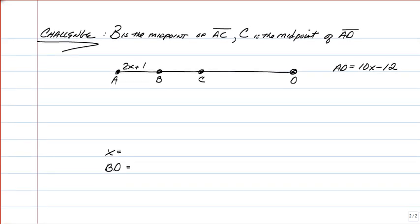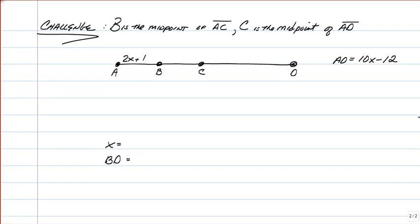Last one is a challenge question. Now it's not that much difference from what we just did, except for now we have a double midpoint problem. B is the midpoint of AC, and C is the midpoint of the biggest segment AD. And you are given that AB is 2x plus 1, and AD is 10x minus 12. Again, I'd like you to try this on your own. Go ahead and pause the video. As soon as you're ready, click play, and this time I will go through this step by step just so you know what's going on. Give it a try.